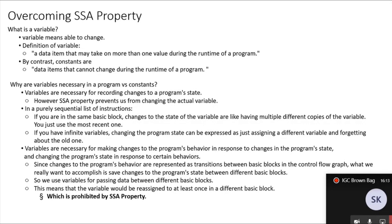So what is a variable in general? Variable means able to change. A variable is a data item that may take on more than one value during the runtime of a program, which is key for constructing control flow statements. By contrast, constants are data items that cannot change during runtime. Variables are necessary for recording changes to a program's state and acting on such changes. However, the static single assignment property prevents us from changing the variable. In the same basic block, changes to the state of a variable are like having multiple different copies — you just use the most recent one.